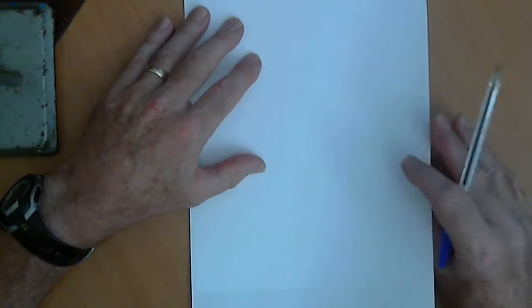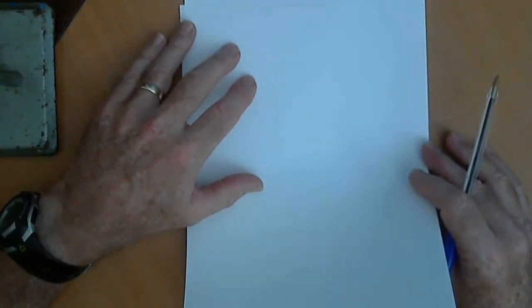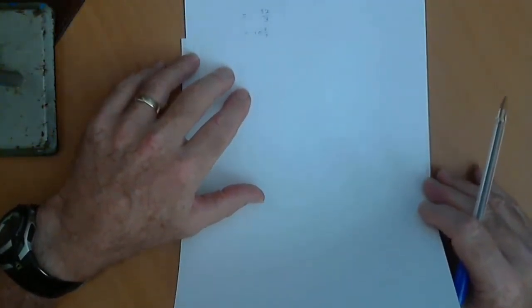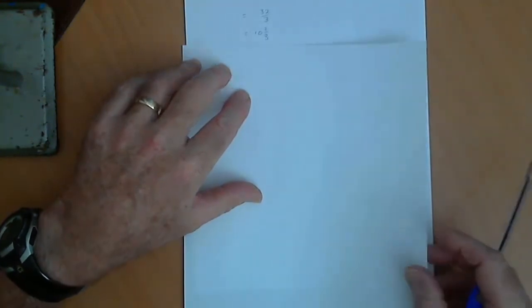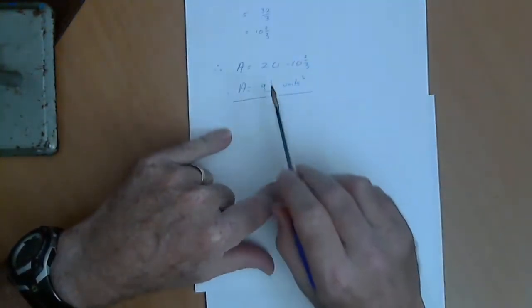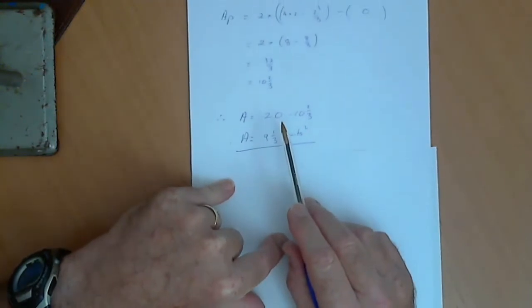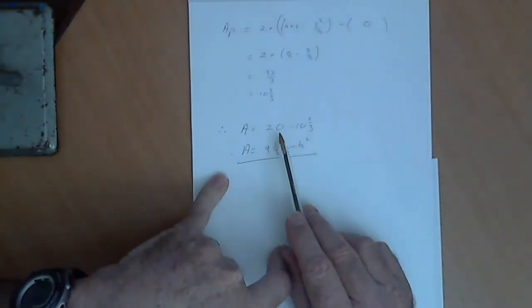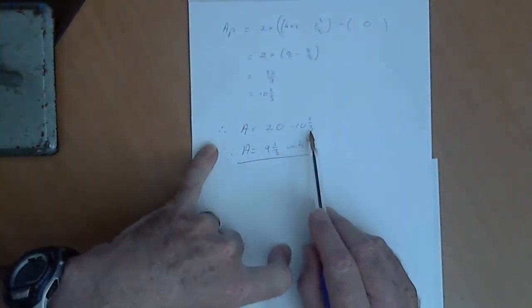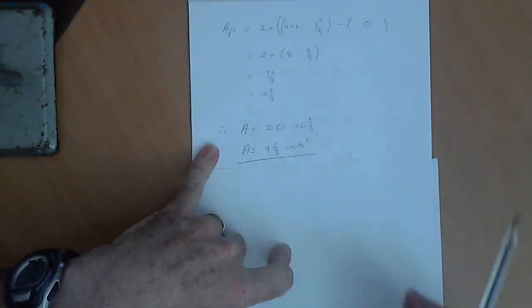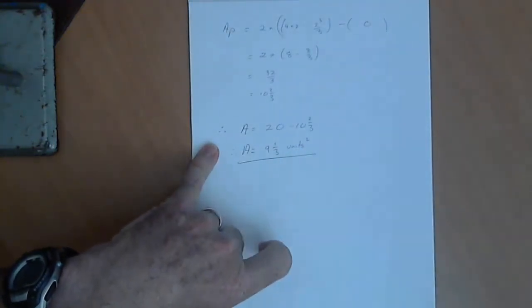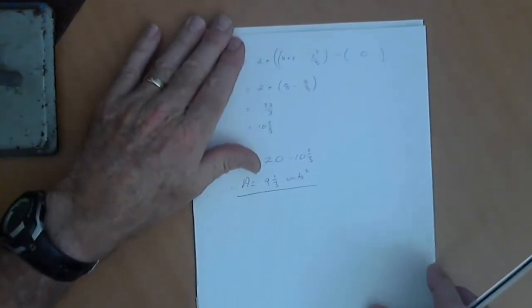So, we substitute our values in, simplify it, and then work out the value of 10 and 2 thirds. And then, to work out the area, obviously, the 20 for the trapezium minus the 10 and 2 thirds, which gives us an area of 9 and 1 third. So, that's one type of problem.